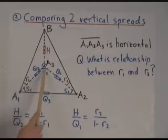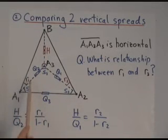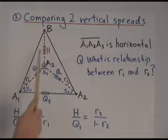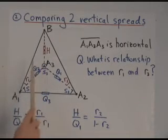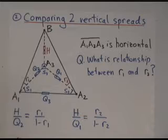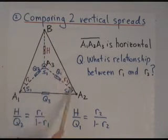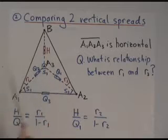Alright, let's start with this right triangle here. H over this equals this over that. So H over Q2 equals R1 over 1 minus R1. Exactly in the same way over here, H over Q1 is now R2 divided by 1 minus R2.